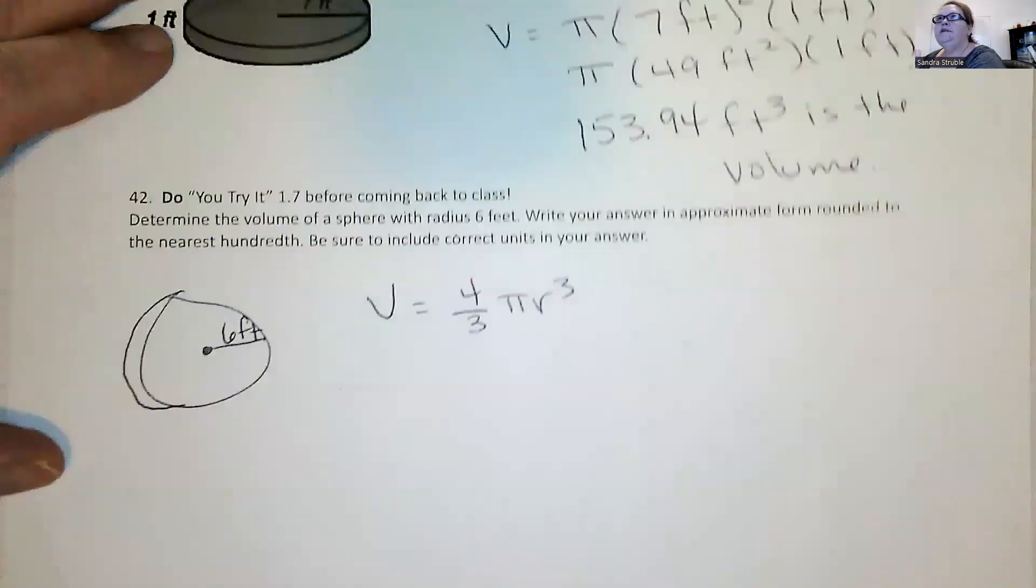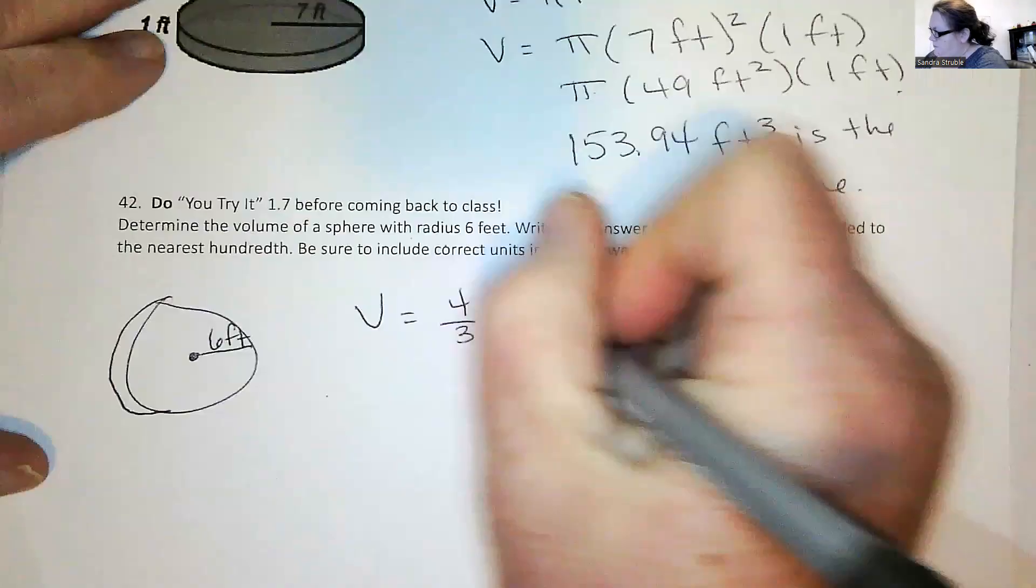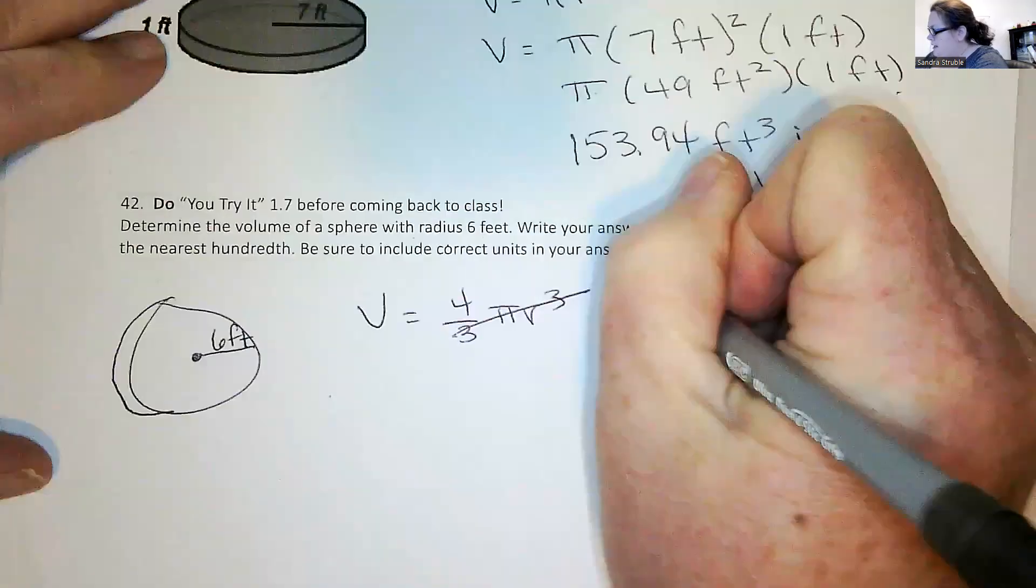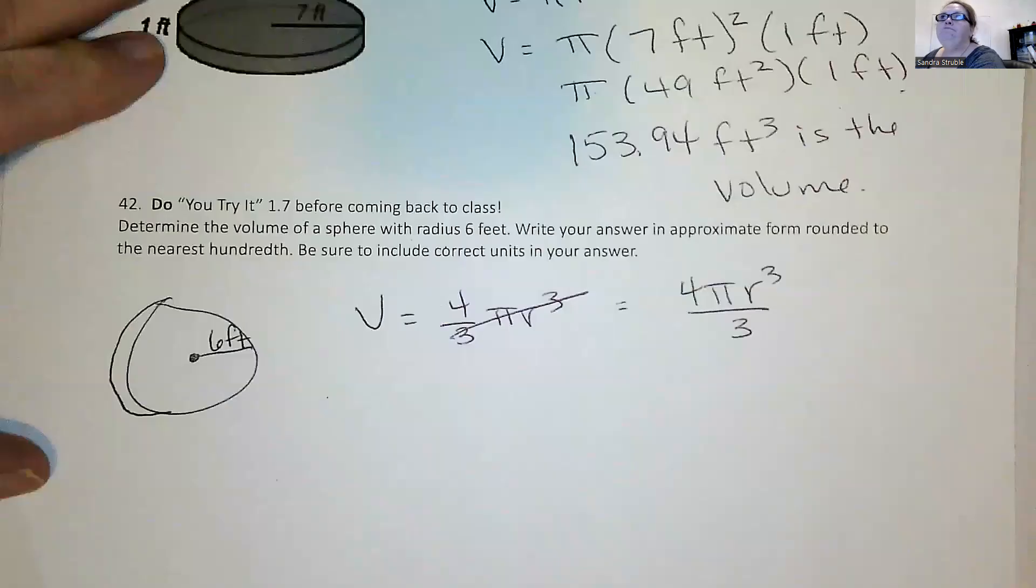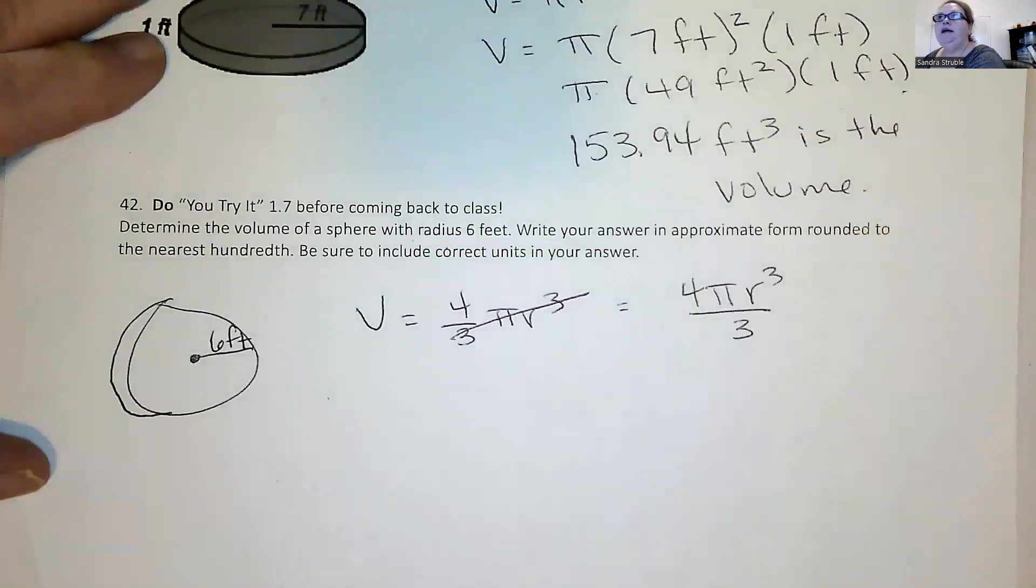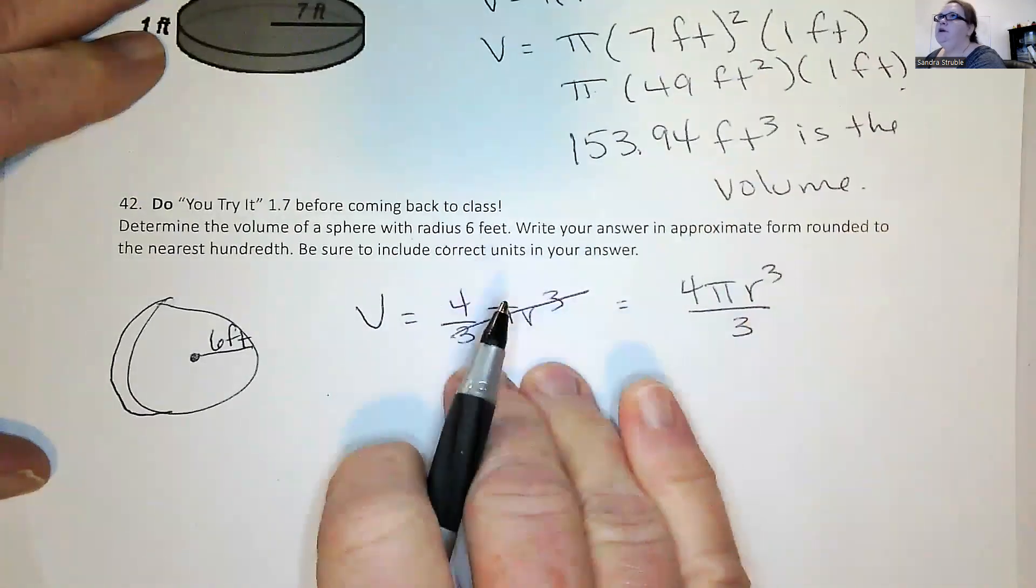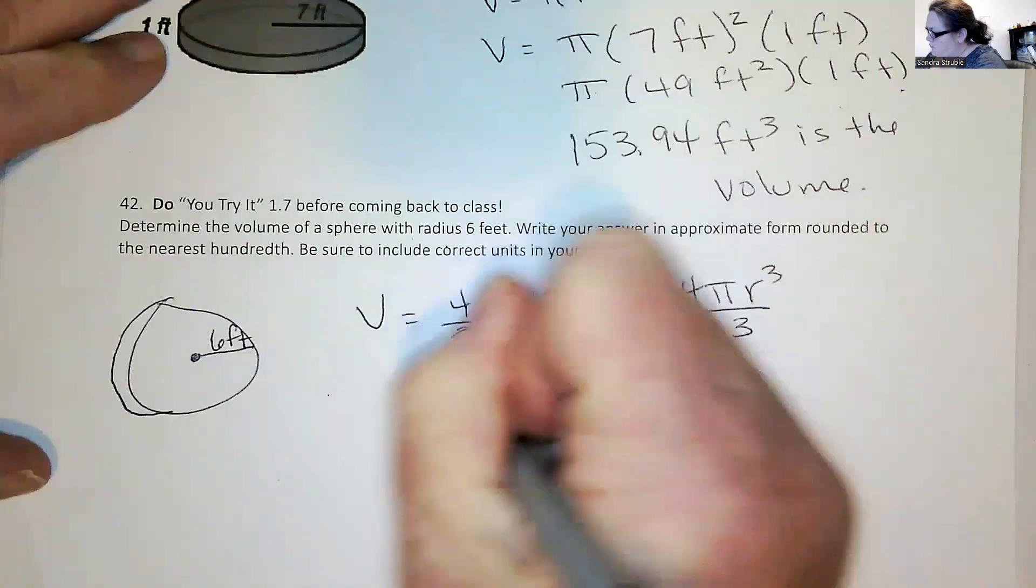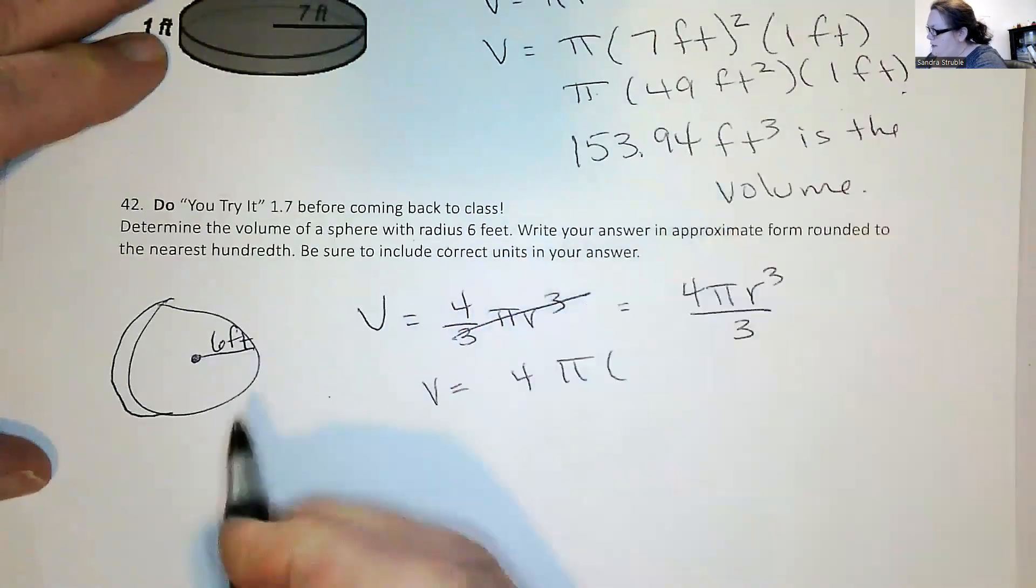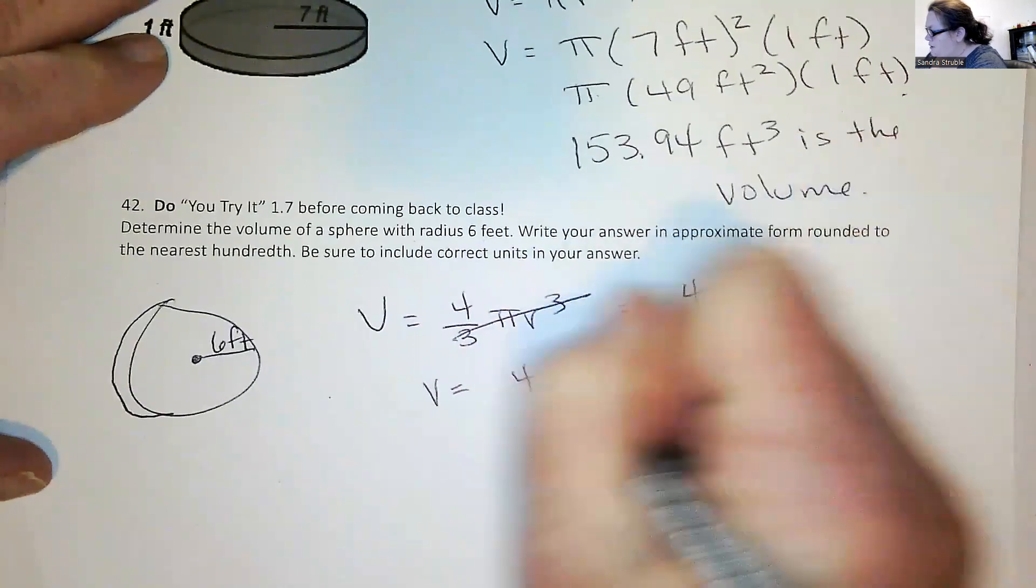The other way to write this, which I find students do better with, is to do instead four pi r cubed divided by three. Less mistakes are made whenever you do it using this formula versus this one. I promise you've seen it too many times. So we've got the volume is equal to four pi. The radius is six feet. That's going to be cubed. And all of that is divided by three.